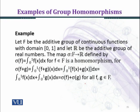Now we shall consider another example. Let F be the additive group of continuous functions with domain [0,1] closed interval, and let ℝ be the additive group of real numbers. The map σ: F → ℝ defined by σ(f) = ∫₀¹ f(x)dx for f ∈ F. We want to check whether σ is a homomorphism or not.